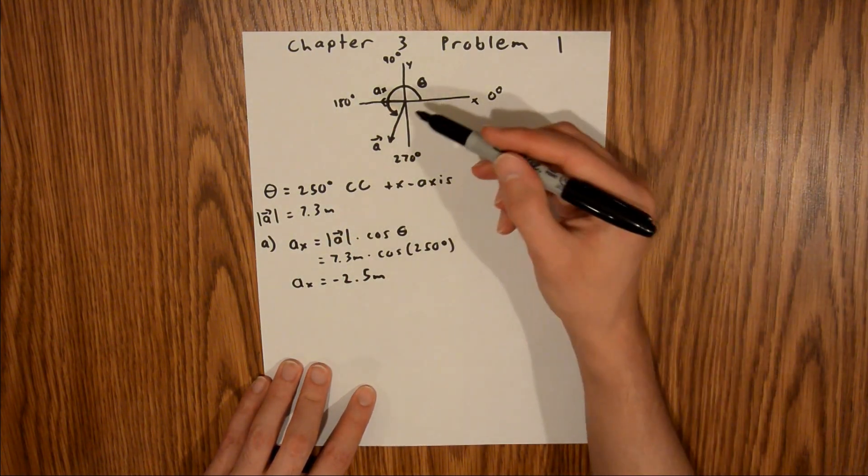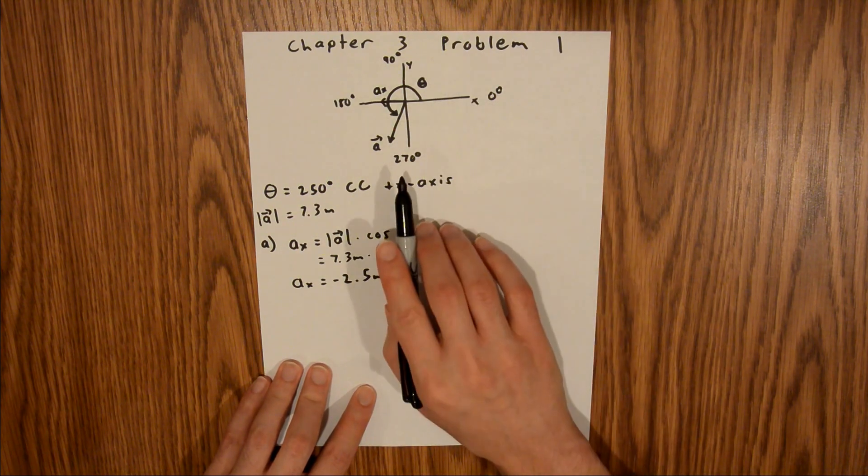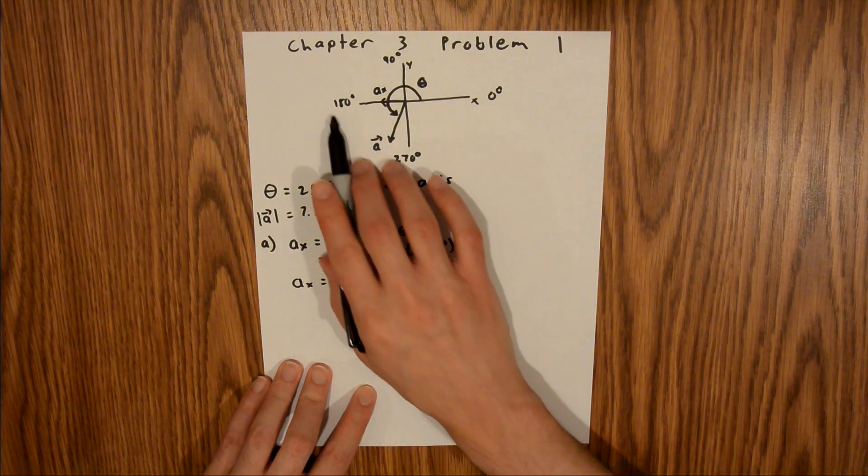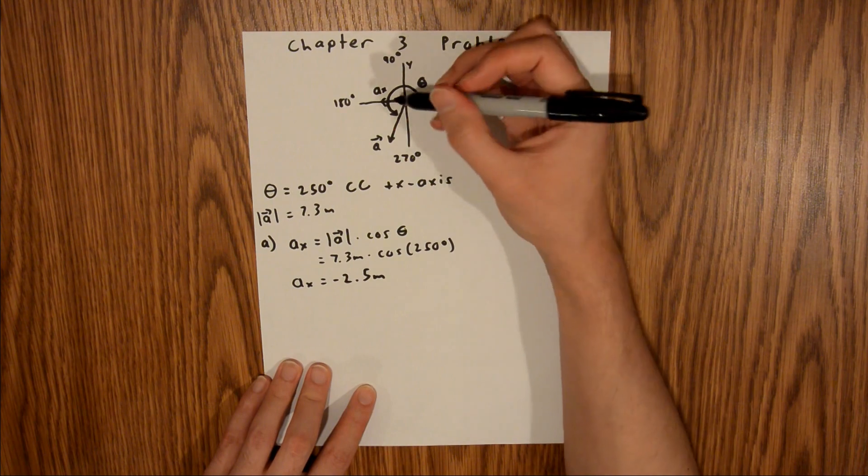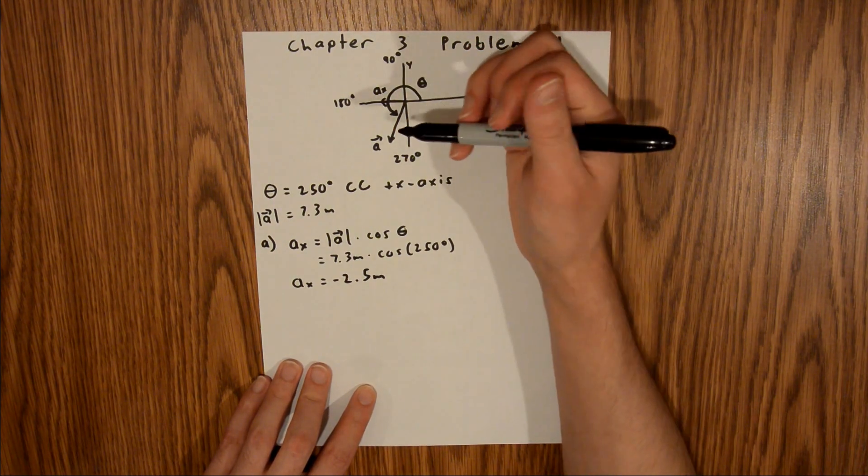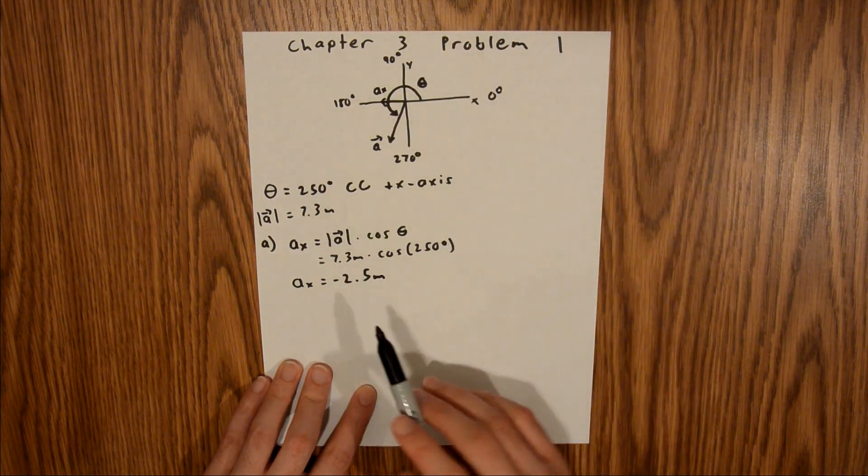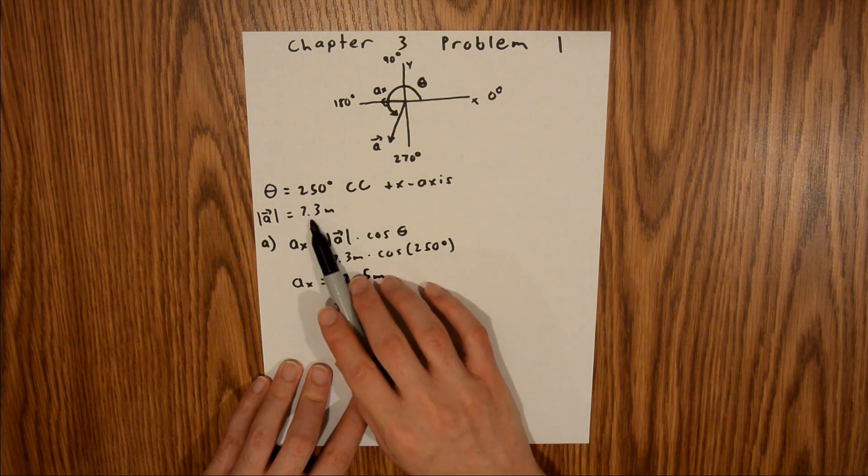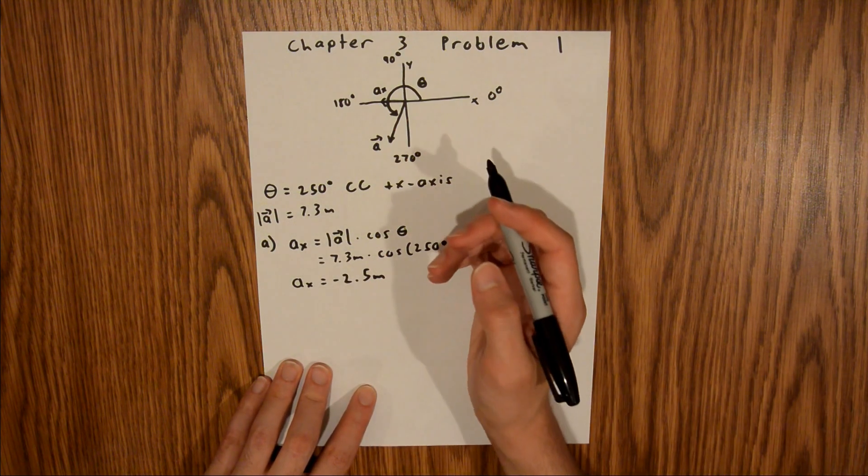And in addition, since this vector is closer to 270 degrees than it is to 180, the magnitude of that x component should be much less than the magnitude of this vector. And 2.5 is much less than 7.3. So that also makes sense.